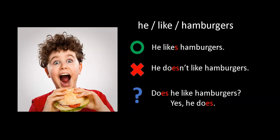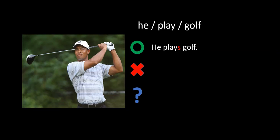Next one: we have Tiger Woods. He play golf. We need an S because it's a he, so he plays golf. Next, he doesn't play golf. Question: does he play golf? The answer: yes, he does.